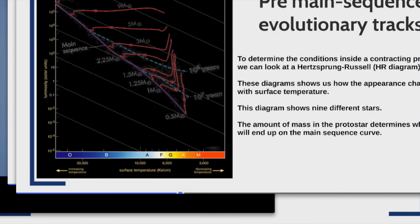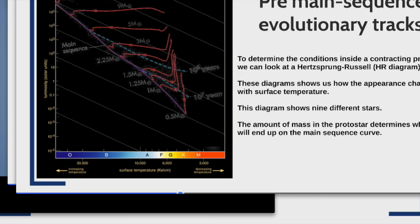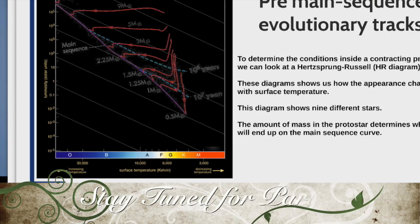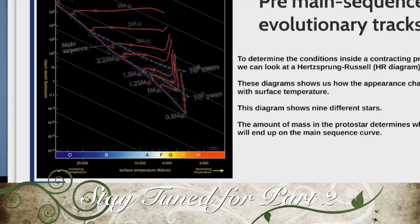In the next part of the lesson we will look in more detail at how protostars become main sequence stars and some of the things that happen to the region surrounding them. Stay tuned for the next part of the lesson.